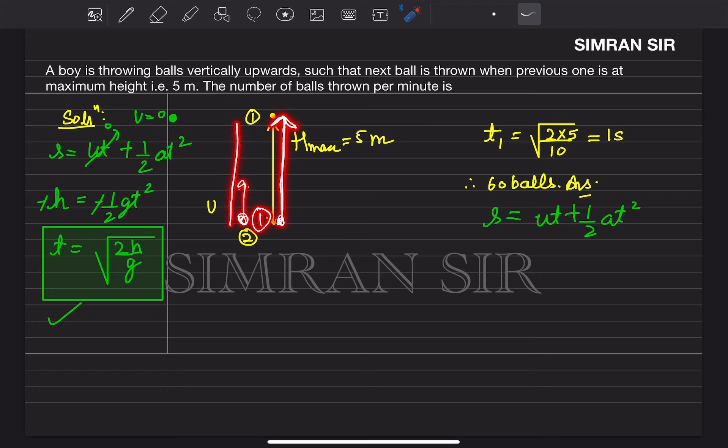Each ball takes 1 second to reach maximum height. So balls are thrown every 1 second. In 60 seconds, which means 60 balls will be thrown. That is our answer.